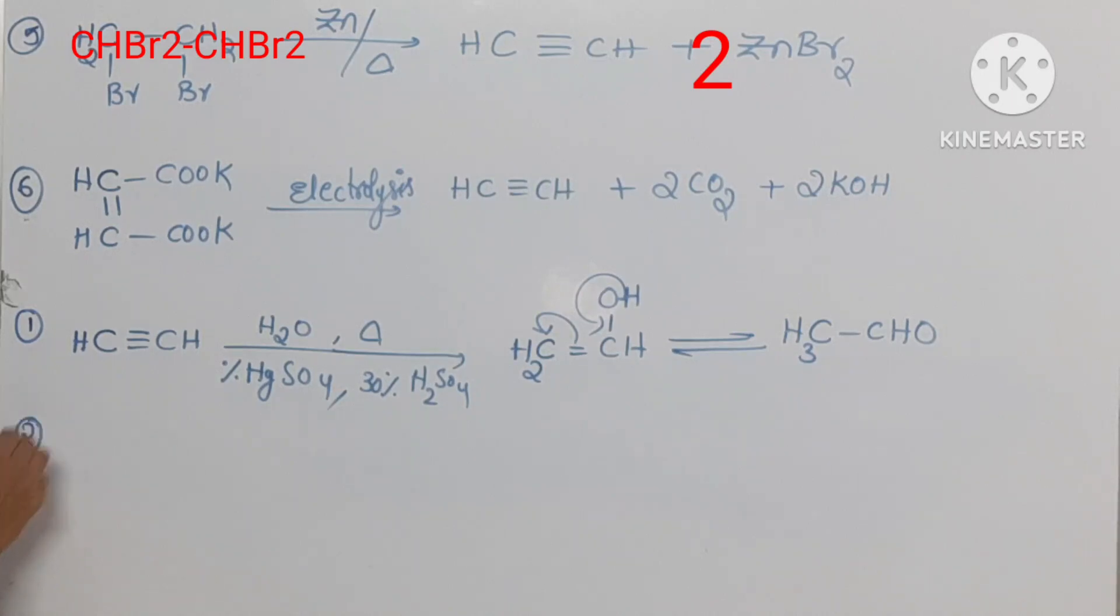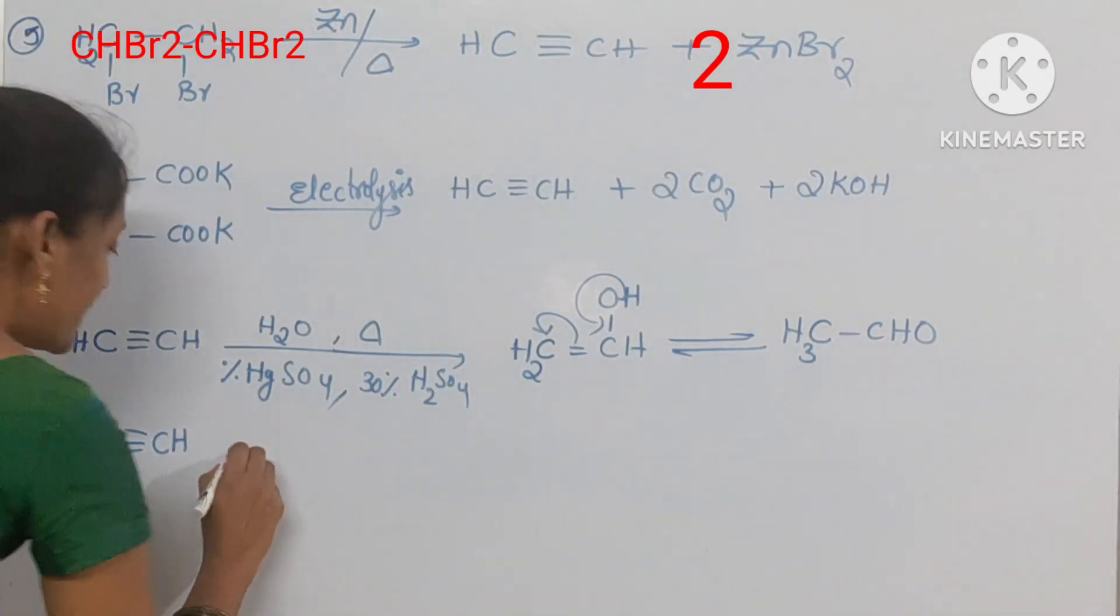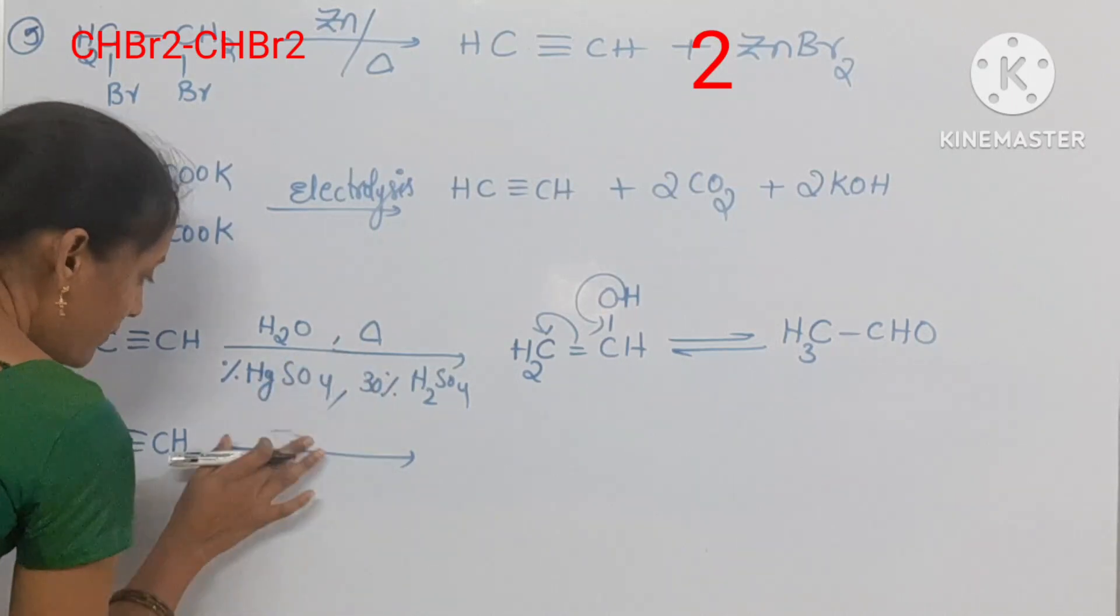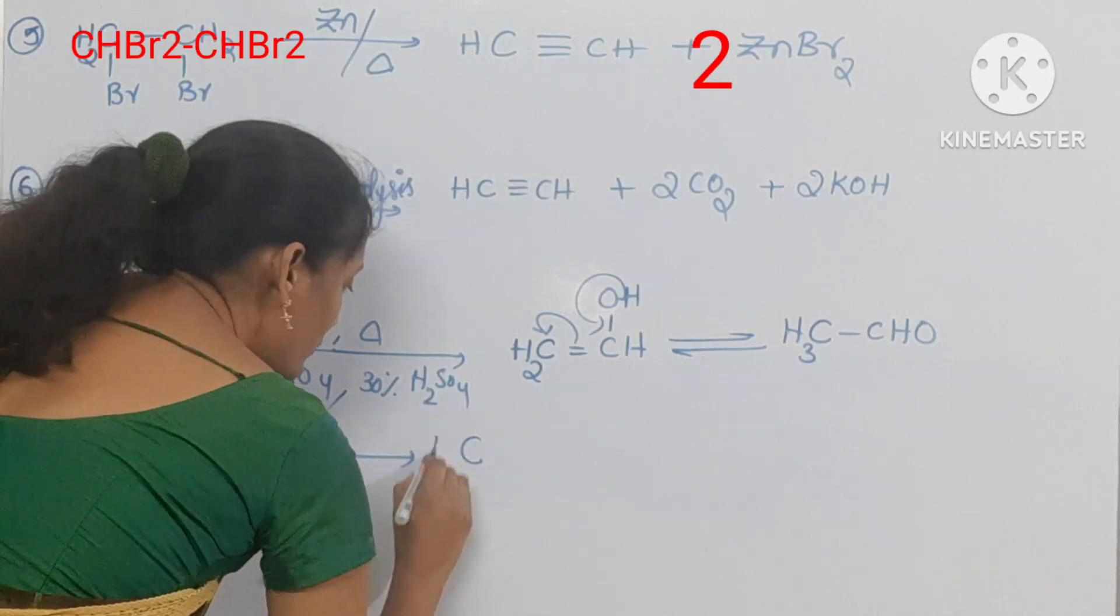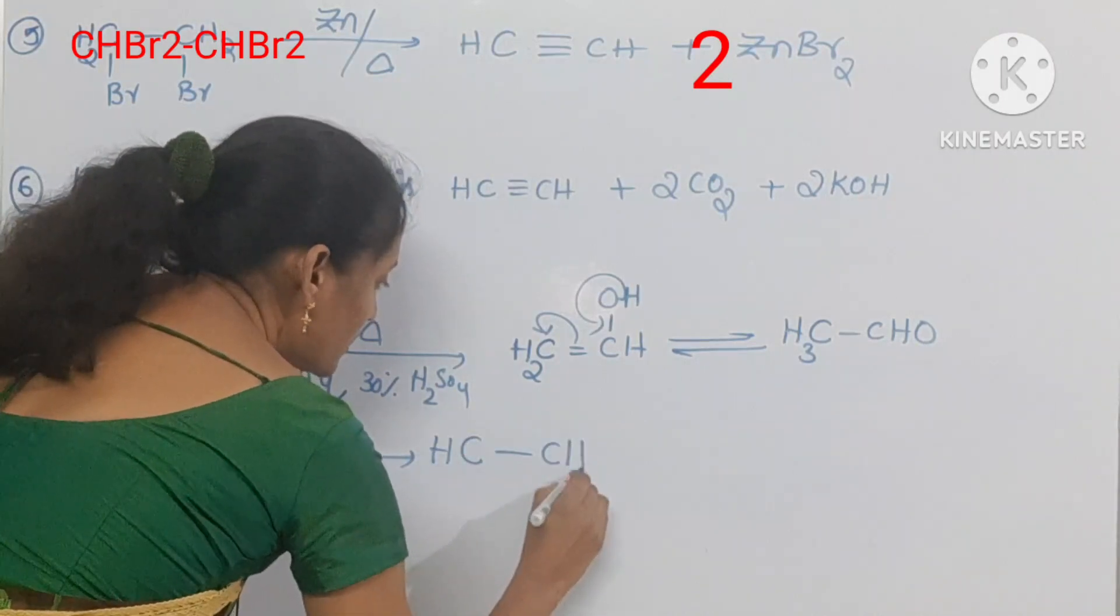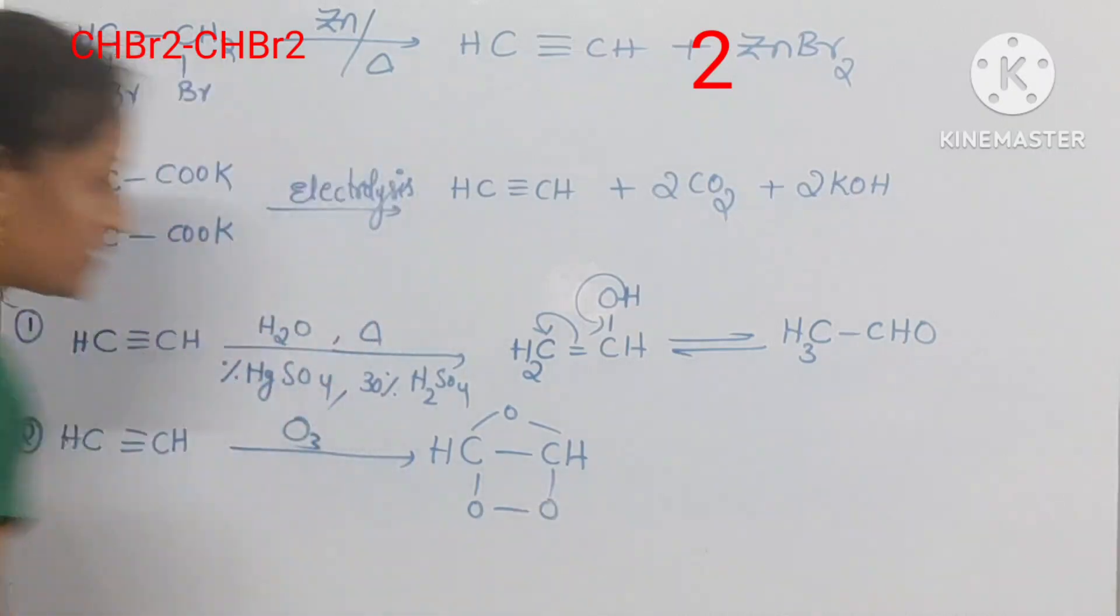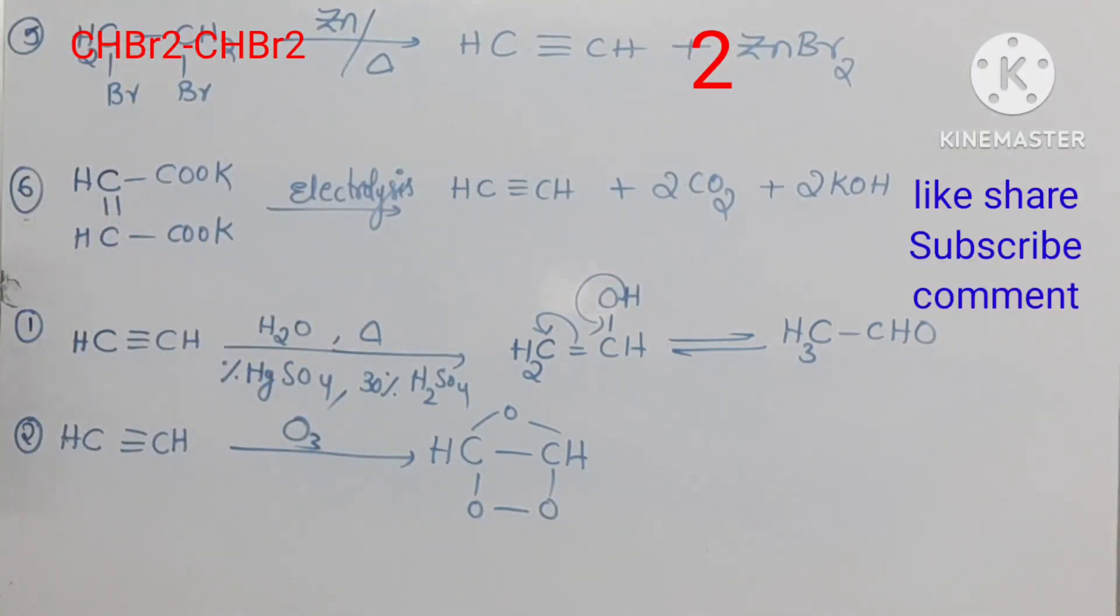Another chemical reaction is here. Acetylene reacting with ozone in presence of zinc and water. First you need to take ozone O3. So triozonide would be formed. CHO, this is also oxygen. See this is the cyclic intermediate will be formed.